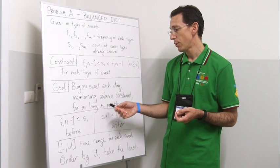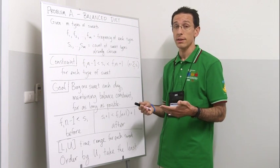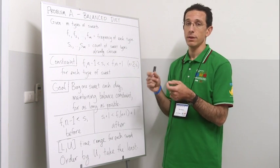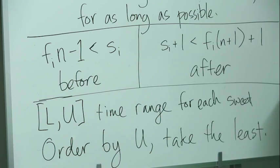So the algorithm that this suggests is that we always take the one sweet with the lowest upper bound from the available sweets, consume it, create a new interval for that sweet, and then put that interval into either of the priority queues depending on its status. We do that until such time as we can't do it anymore.